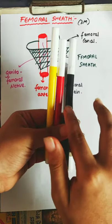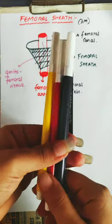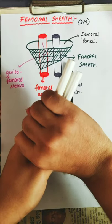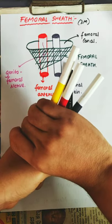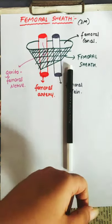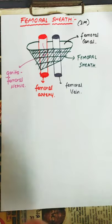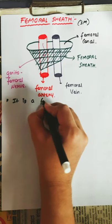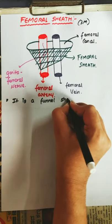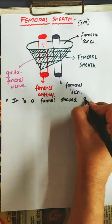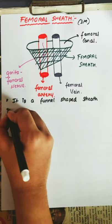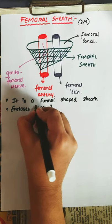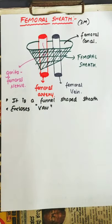Femoral nerve, femoral artery, and femoral vein are present, and this is the femoral sheath which is enclosing the artery, vein, and the nerve. It is a funnel-shaped sheath that encloses VAN — where VAN stands for vein, artery, as well as a duct (lymphatic vessel).